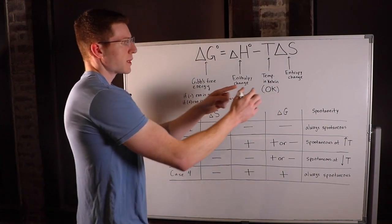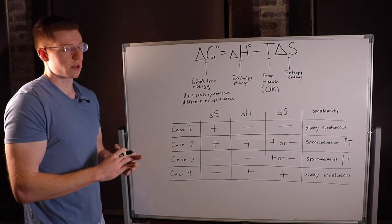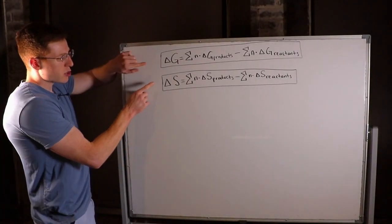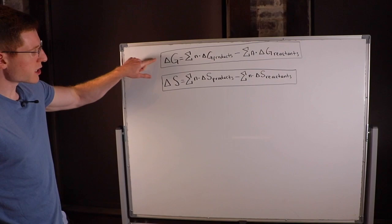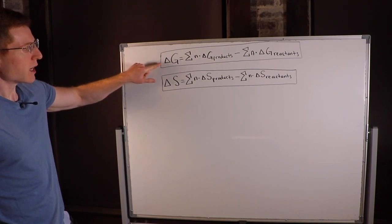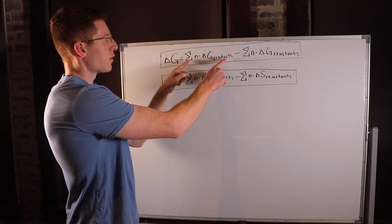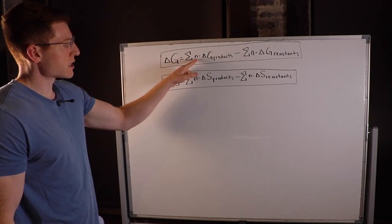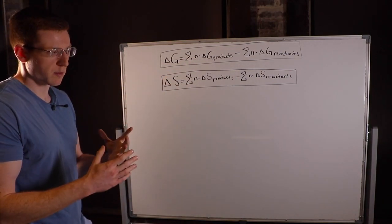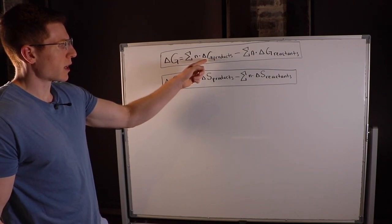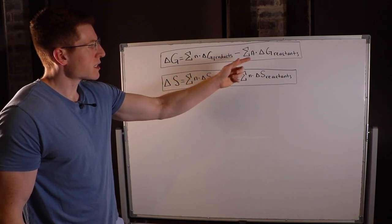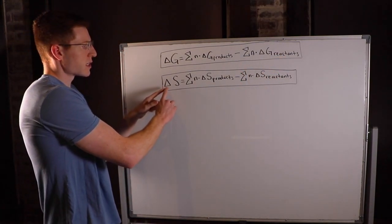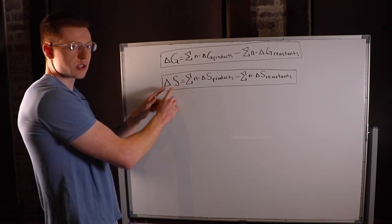The entropy change, delta S, is the increase or decrease in randomness of the reaction. These two equations show that delta G of an overall reaction equals the sum of delta G's of products, where n is the number of moles, minus the sum of delta G's of reactants. This equation says the same for entropy, delta S.